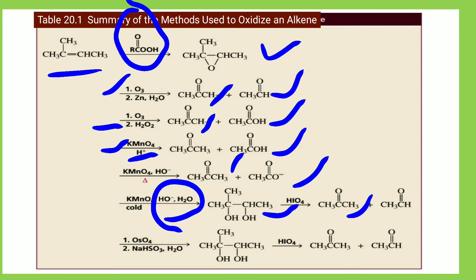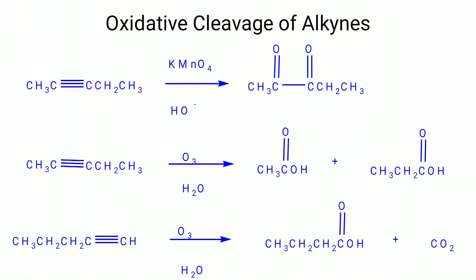Another oxidizing agent is osmium tetroxide (OsO4) in the presence of NaHSO3 and water, which also gives a diol. This diol, when reacted with HIO4, gives ketones and aldehydes. These are all the oxidizing agents used to oxidize alkene compounds.